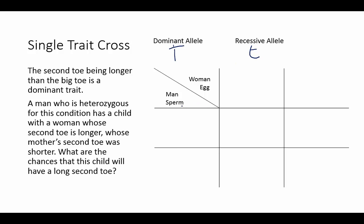Now let's look at the question. A man who is heterozygous for this condition has a child with a woman whose second toe is longer, but whose mother's second toe was shorter. What are the chances that this child will have a long second toe?